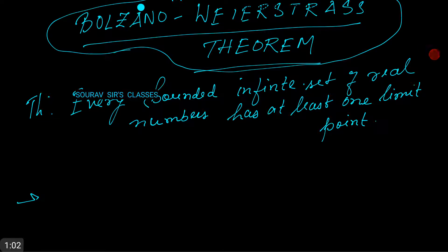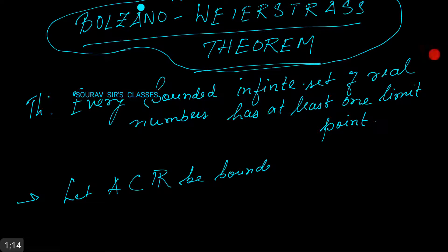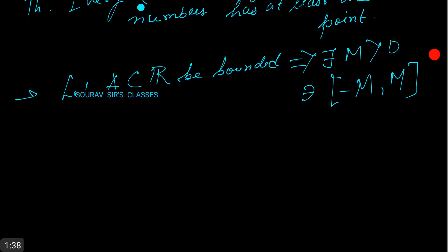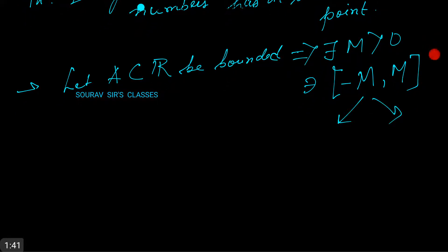Step 1: Let A be a subset of R that is bounded. Bounded implies that there exists an M greater than 0 for which A is contained in the closed interval [-M, 2M]. Now we divide this interval into two parts, essentially dividing A into two parts.